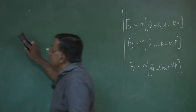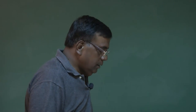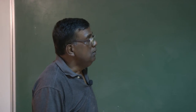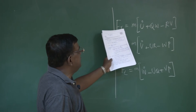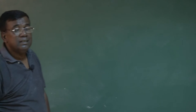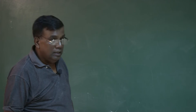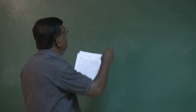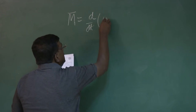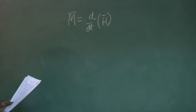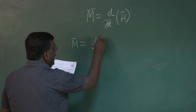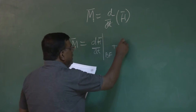Let us try to find out the expression for the moment equation. In last lecture, we have seen fx, fy, fz can be expressed as this, and we are clear — we have not talked about what these external impressed forces on the airplane are composed of. We will discuss that also. Let us first handle the moment equation. If everything was with respect to the inertial frame, it is straightforward, but since we are working in a rotating frame, we use: M equals dH/dt evaluated at body frame plus omega cross H.